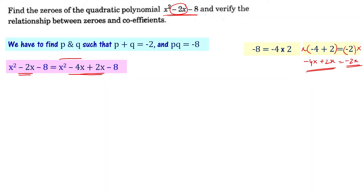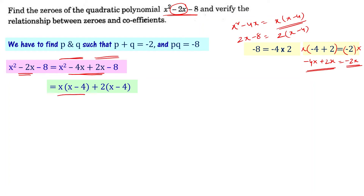Now looking at the first two terms: x squared minus 4x equals x times x minus 4. And for the next two terms: 2x minus 8, we take 2 as common, giving 2 times x minus 4. So we write x times x minus 4 plus 2 times x minus 4. Taking x minus 4 as common, we get x minus 4 into x plus 2.